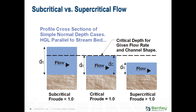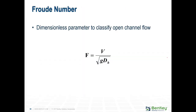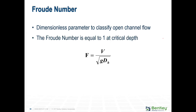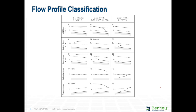Sometimes we're concerned with this for many reasons, but often when we have a transition between supercritical and subcritical flow, we can have things like hydraulic jumps, which are a high concern. The software uses the Froude number to classify critical, subcritical, or supercritical flow, and it is reported automatically for all your elements.